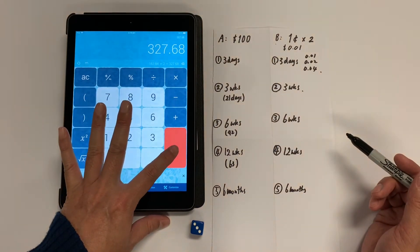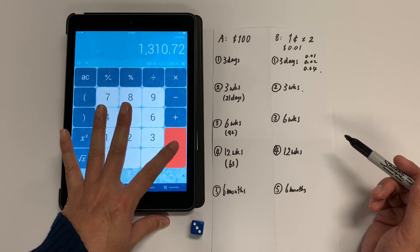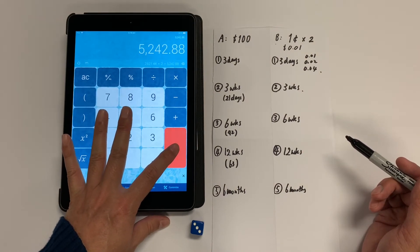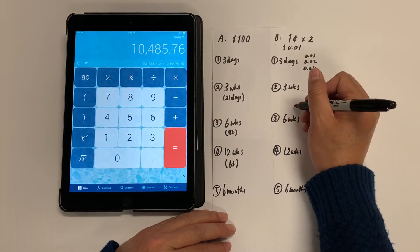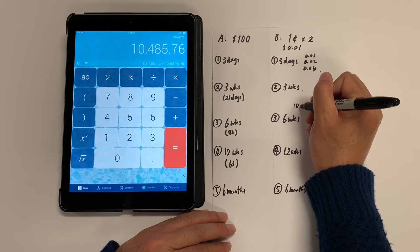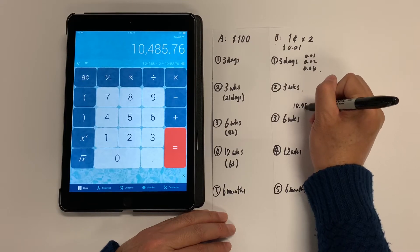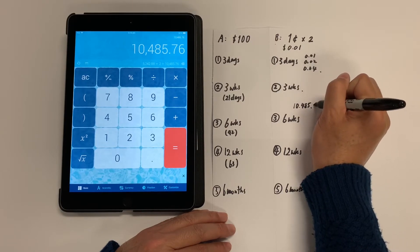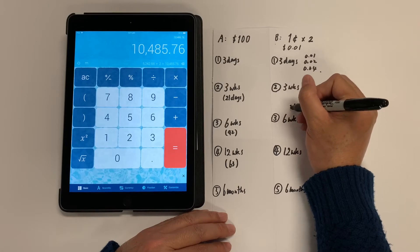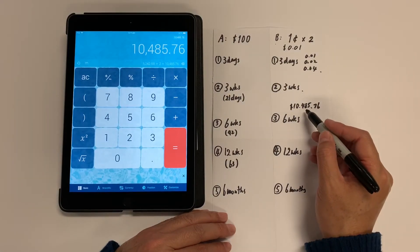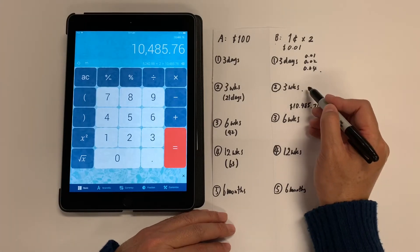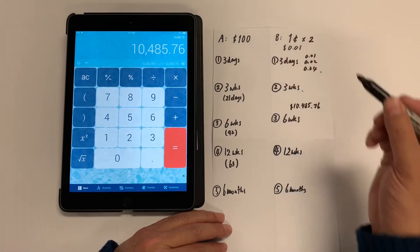16, 17, 18, 19, 20, 21. On the 21st day, he would have received $10,485.76. 21 days. And it takes only 15 days to go over this person's amount.